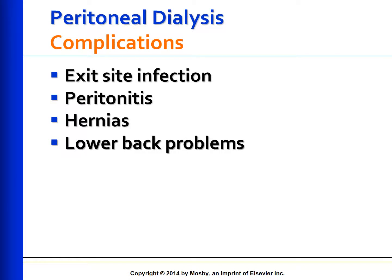Complications of peritoneal dialysis: Infection of the peritoneal catheter site is most commonly caused by Staphylococcus aureus or Staphylococcus epidermidis from the skin flora. Clinical manifestations of an exit site infection include redness, tenderness, inflammation, and pain. If superficial exit site infections are not immediately treated with antibiotics, they can lead to peritonitis, requiring removal of the catheter.